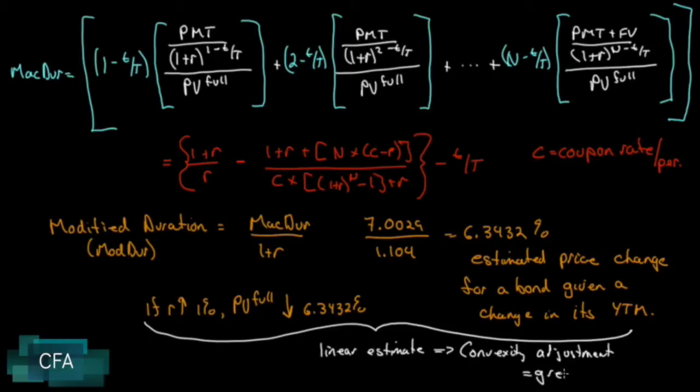So Macaulay duration, which is expressed in years, moves over to modified duration by dividing it by 1 plus the discount rate to get an estimate, a linear estimate, of the change in the full price of the bond given a 1% change in the bond's own yield to maturity.